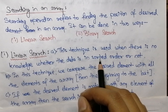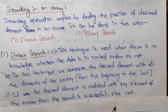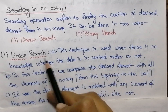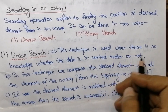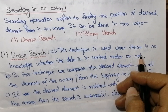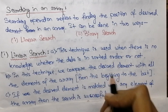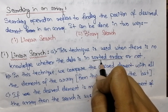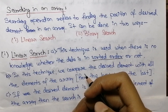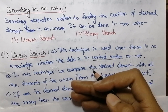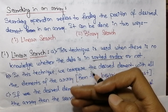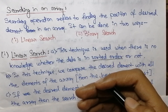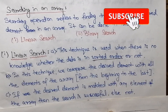Today let's discuss about linear search; in the next video we will discuss about binary search. The linear search technique is used when there is no knowledge about whether the data is in sorted order or not. This linear search is used when we have no knowledge about the arrangement of the elements of the array.